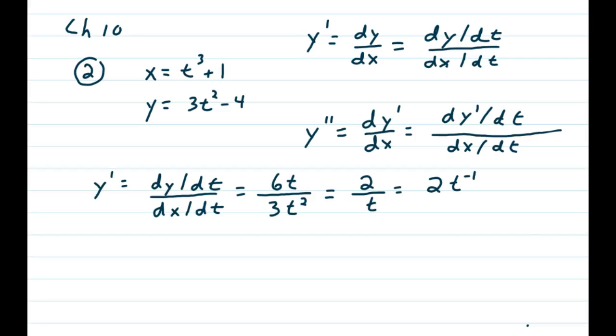So first we'll find the first derivative. y prime is dy/dt over dx/dt. Looking up above, dy/dt is the derivative of that y part of the parametric equation. So that gives you the derivative of 3t squared minus 4, which is 6t. dx/dt, looking at the x portion, which is t cubed plus 1, dx/dt is 3t squared.